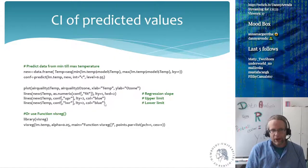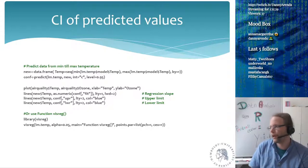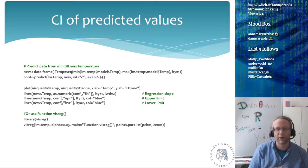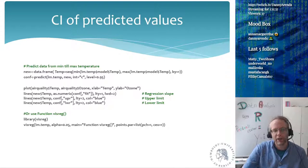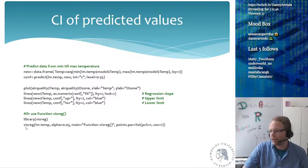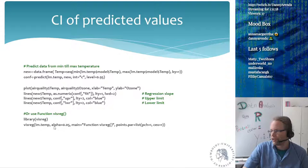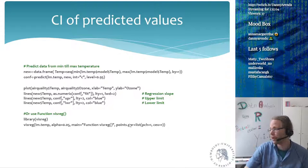We can also calculate the confidence interval, and there are two ways of doing this. The easy way is using an external library called visreg — for visualizing regression — which has a function you can just call: do a visreg of your regression model, set alpha to 0.05, give it a title, and set some parameters to make it look nicer.